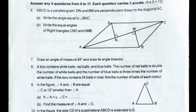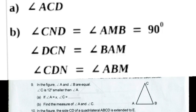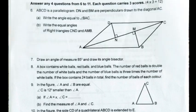Question 6. ABCD is a parallelogram. DN and BM are perpendiculars drawn to the diagonal AC. A. Write the angle equal to angle BAC. B. Write the equal angles of right triangles CND and AMB. Answer: A. Angle ACD. B. Angle CND equals angle AMB equals 90 degrees. Angle DCN equals angle BAM. Angle CDN equals angle ABM.